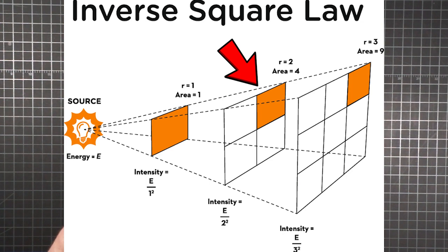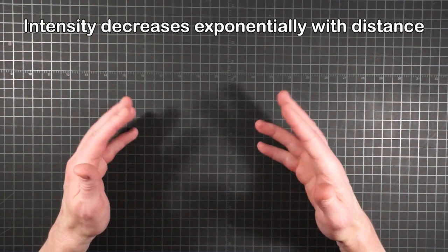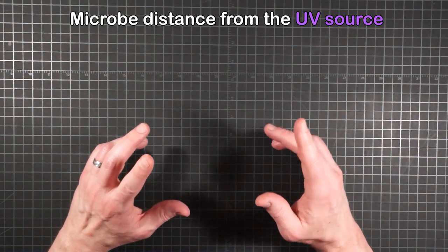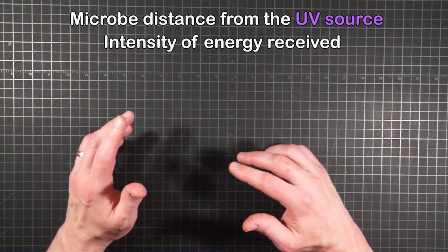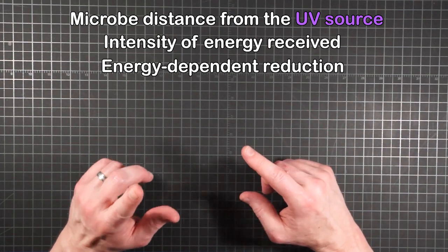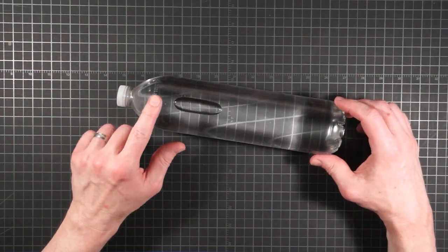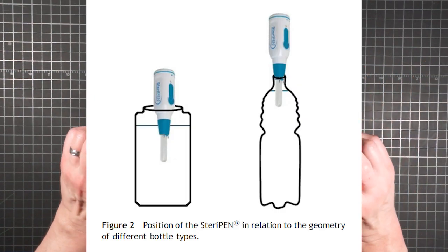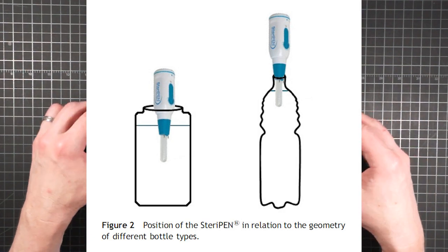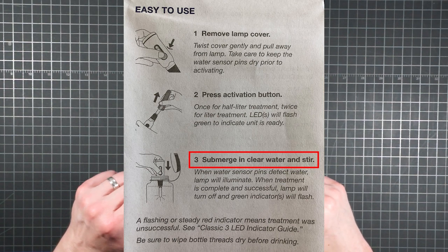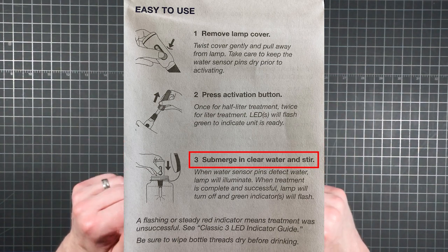In other words, energy exposure decreases exponentially with distance from the light source. So with UV, the disinfection is based on the intensity of illumination. The further a microbe is away from the bulb, the less energy it receives. And the less energy it receives, the lower its percentage of reduction will be. Since the pen only ever pokes into the top of your container, bottle shape could become a factor. Even with two one-liter bottles, the distance to the bottom is greater with one design than the other. The SteriPen accounts for this with their instructions to stir while illuminating the water.